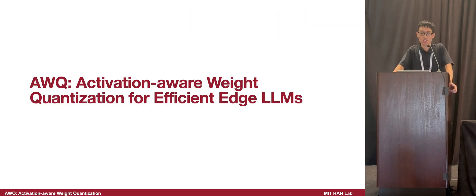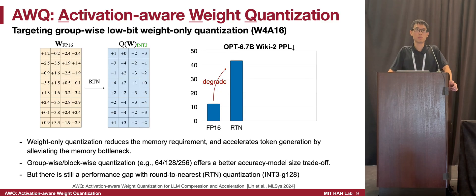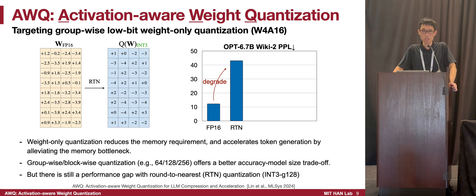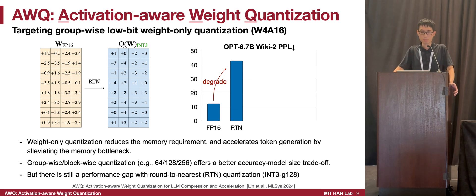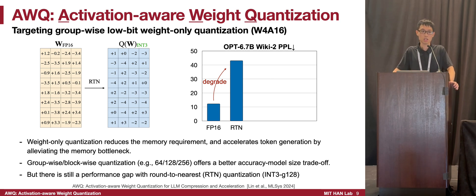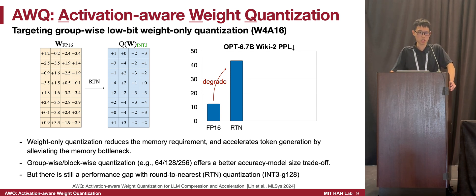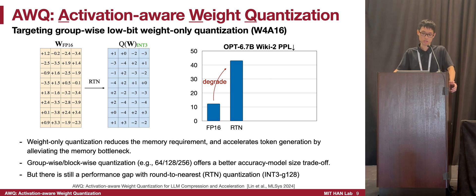Let's jump into AWQ. We start our experiments from a simple baseline: round-to-nearest quantization. We found that if we quantize large language models directly using this method to very low bits, like 3 bits, we observe very significant accuracy loss. Specifically, the perplexity of the OPT-7B model degrades from around 10 to around 40, meaning the entire model is not usable after quantization.